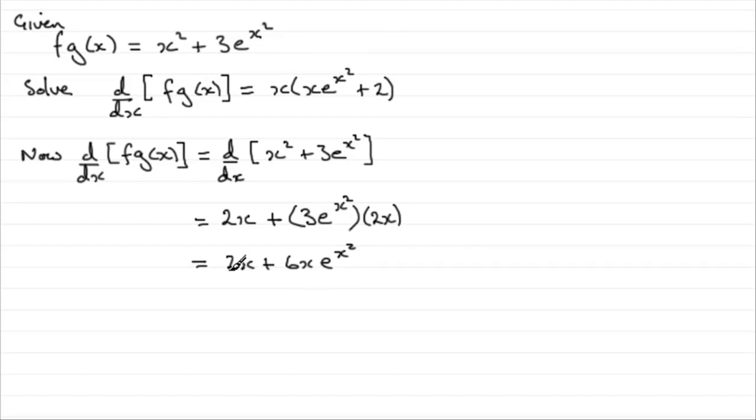Now we're told that this is equal to this value here. So what we can say is that, therefore, 2x plus 6x e to the power x squared must be equal to this function here. So we'll just write that in as x bracket x e to the x squared plus 2. What would I want to do next? Well, I think what we'll do is we'll expand that bracket on the right here. And if we do that, we're going to get that this equals x squared e to the x squared plus 2x.